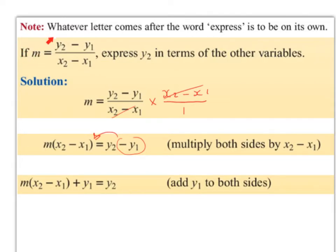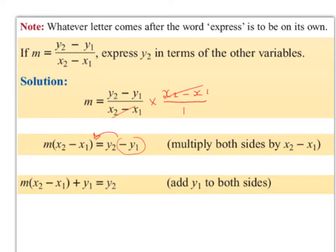If m equals (y2 minus y1) divided by (x2 minus x1), express y2 in terms of the other variables. Note: whatever letter comes after the word 'express' is to be on its own. So we want to get y2 on its own. Hopefully you recognize this — it's the formula for the slope of a line in coordinate geometry. So we have m equals (y2 minus y1) divided by (x2 minus x1), and I'm going to highlight the y2 so it stands out — that's what we're trying to get on its own.